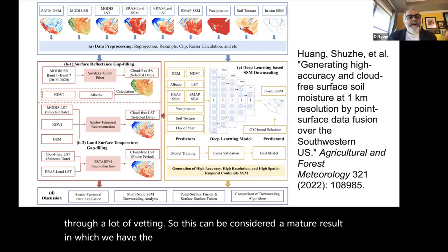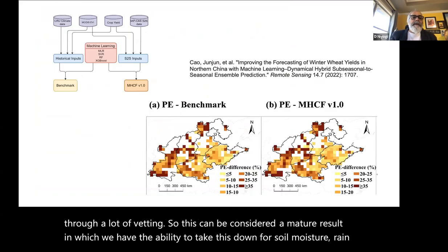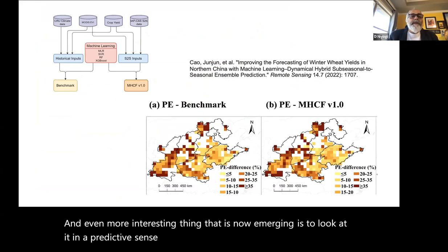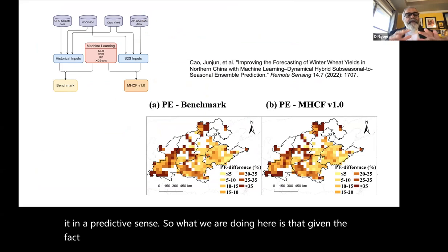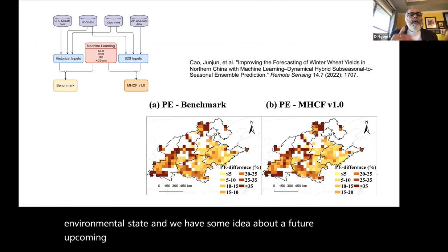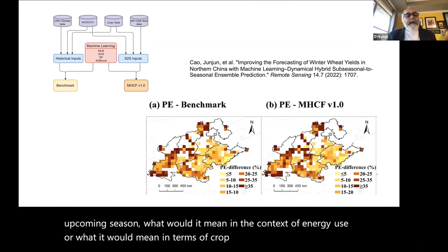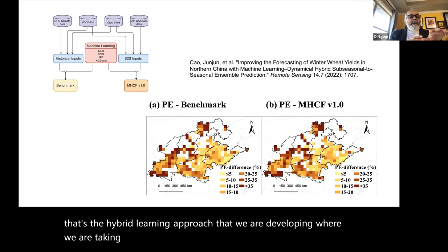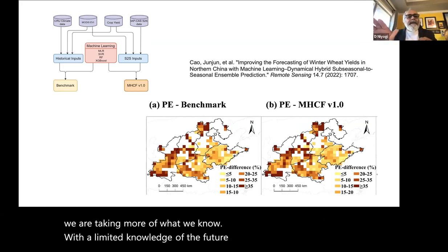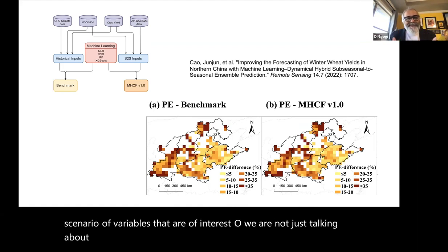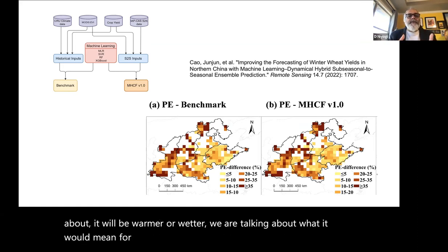An even more interesting thing now emerging is looking at this in a predictive sense. Given our ability to recreate the soil state and environmental state, and some knowledge of an upcoming season, what would it mean for energy use or crop yield? That's the hybrid learning approach — taking what we know with limited knowledge of the future and creating future scenarios of variables of interest, going beyond 'it will be warmer or wetter' to actual energy use or agricultural output.